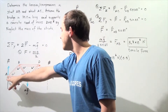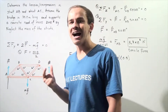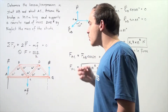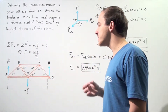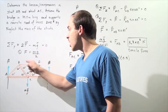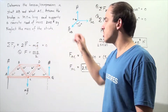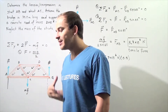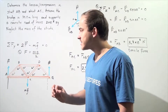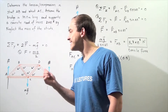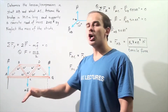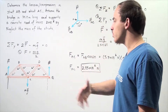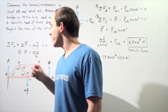Assume the bridge is 70 meters long and supports a concrete road of mass 2×10⁶ kilograms. Because the mass of the concrete road is much higher than the mass of the struts, we can neglect the mass of the struts — assume it is zero. This allows us to assume that the tensile or compressive forces in any strut point along the length of that strut, which becomes important when describing the force diagram at point A.